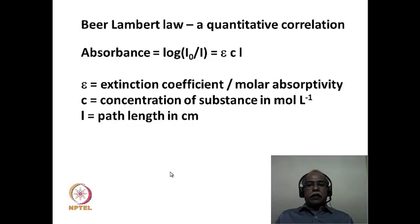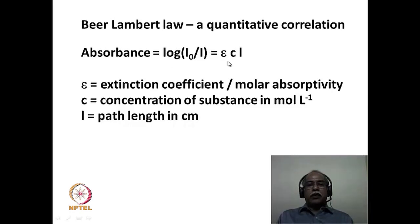Certain laws govern the quantitative aspects of spectroscopy. One is Beer-Lambert's law, a basic law dealing with the quantitative correlation between absorbance and concentration. Absorbance — the logarithmic ratio of I₀ to I — is directly proportional to the concentration. When light passes through a medium, absorbance depends on how many molecules the light encounters. The proportionality constant is known as the extinction coefficient or molar absorptivity, which is a constant at a given wavelength for a given substance. This makes absorption spectroscopy a quantitative tool for finding the concentration of unknown substances.